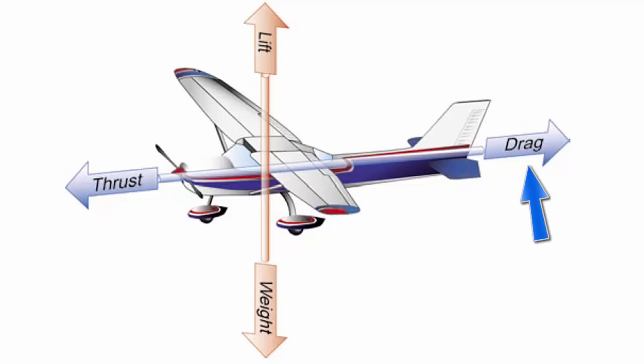Drag is a rearward retarding force and is caused by disruption of airflow by the wings, fuselage, and other protruding objects on the airframe. Drag opposes thrust and acts rearward parallel to the relative wind.